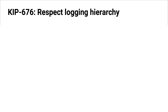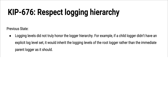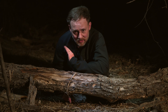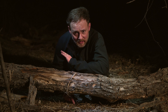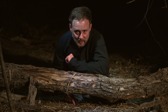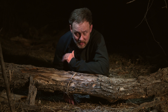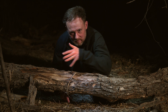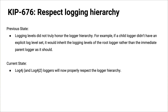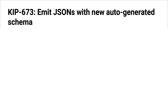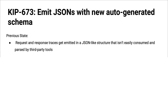KIP-676: Respect the logging hierarchy. In Java, log4j loggers are hierarchical — logger names are usually modeled after package names like org.apache.kafka.clients.producer or org.apache.kafka.clients.consumer. There were three ways to change logging levels in Kafka, but two didn't respect the log4j logging hierarchy: the describe configs RPC call and the log4j controller MBean. You did get hierarchical rippling with the REST API, but now thanks to KIP-676 you get it with all three.